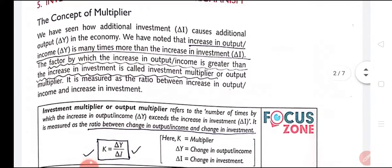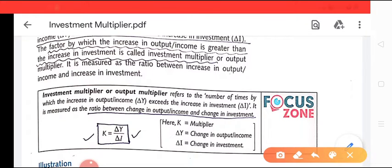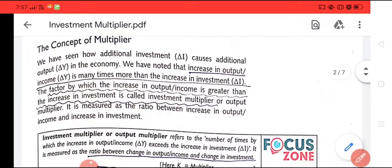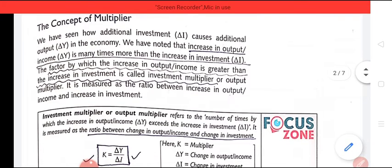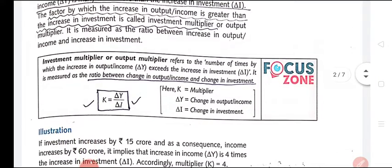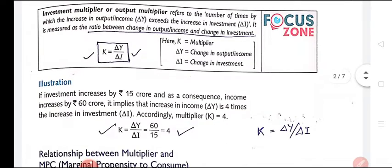Now let's understand the concept of multiplier. Multiplier is the ratio — the number of times income increases due to a change in investment. That factor is called the multiplier and is denoted by capital K. The increase in output or income is many times more than the increase in investment, and the factor by which income is greater than the increase in investment is called the investment multiplier.